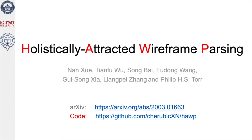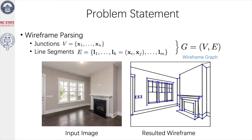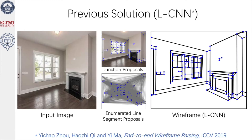This paper presents a new Y-frame parsing method. The problem of Y-frame parsing is to detect junctions and line segments and to yield a Y-frame graph of the input image. Previously, the problem of Y-frame parsing was addressed by LCN, which generates line segments by enumerating junction pairs.